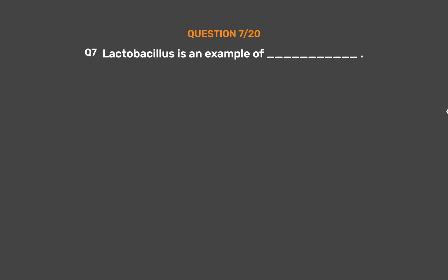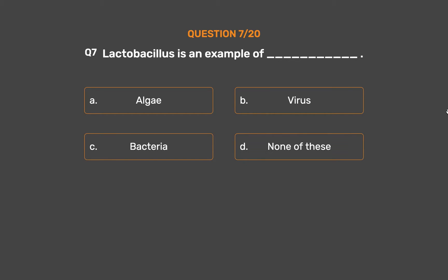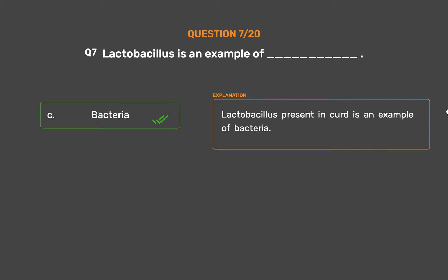Question number 7. Lactobacillus is an example of which microorganism? Option A: Algae. Option B: Virus. Option C: Bacteria. Option D: None of these. The correct answer is Option C, Bacteria. Lactobacillus present in curd is an example of bacteria.